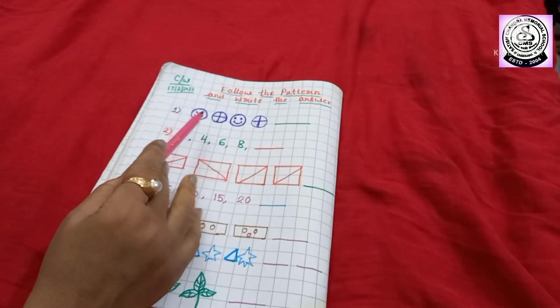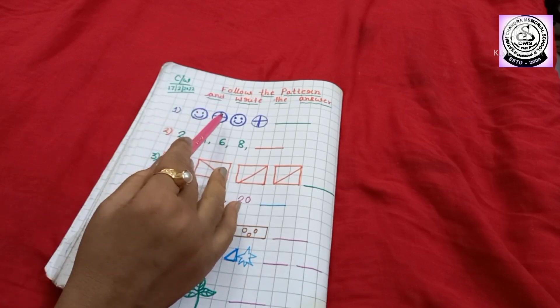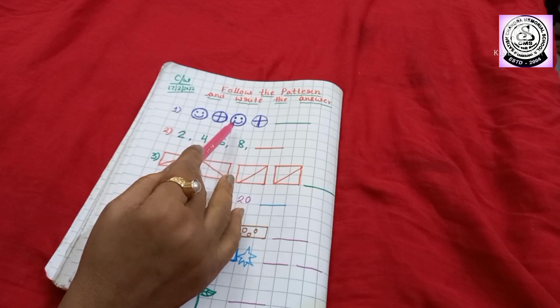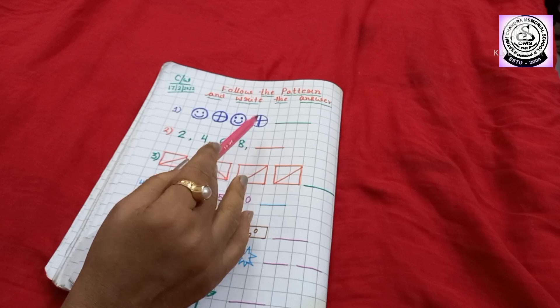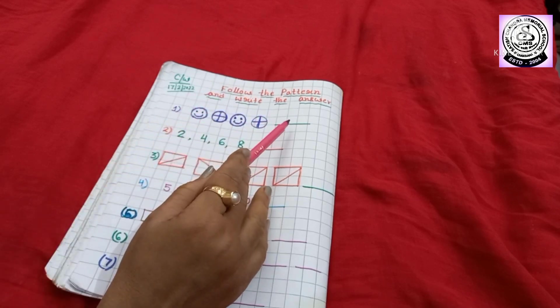Here you can see, I have drawn one smiley. Then, I have drawn one circle and inside the circle, I have given one addition sign. And again, I have drawn one smiley, and again a circle with an addition sign inside. So, what you have to do?